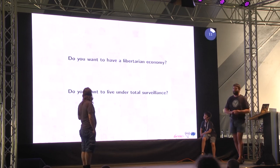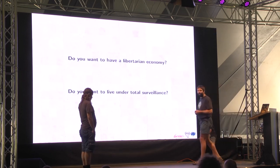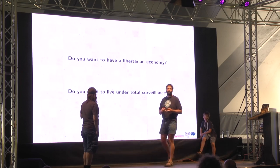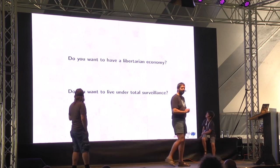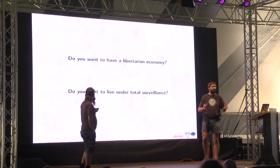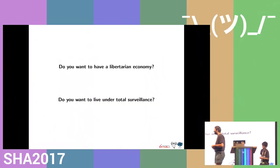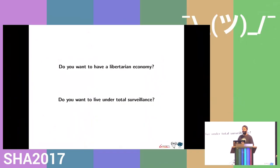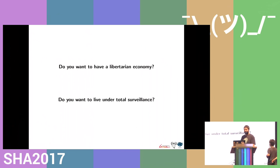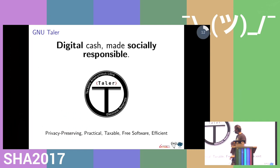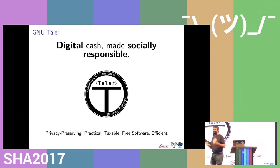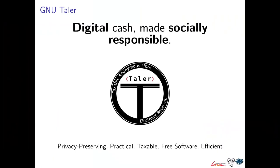So right now we basically have two choices: a libertarian economy — great for extortion, money laundering, no regulation, and rather expensive — or the total surveillance apparatus built by the credit card system. We try to provide a third choice: namely GNU Taler, based on an old idea from DigiCash but with more modern cryptography added.